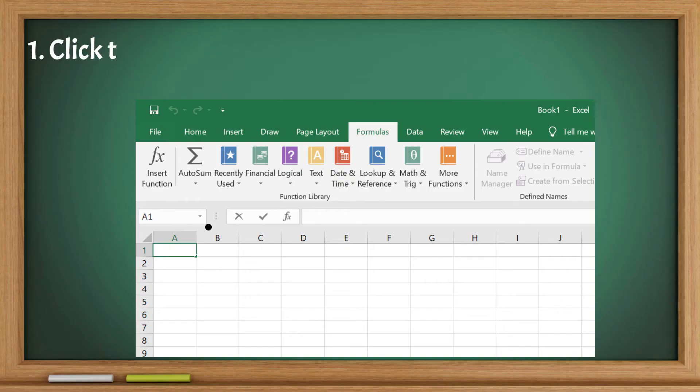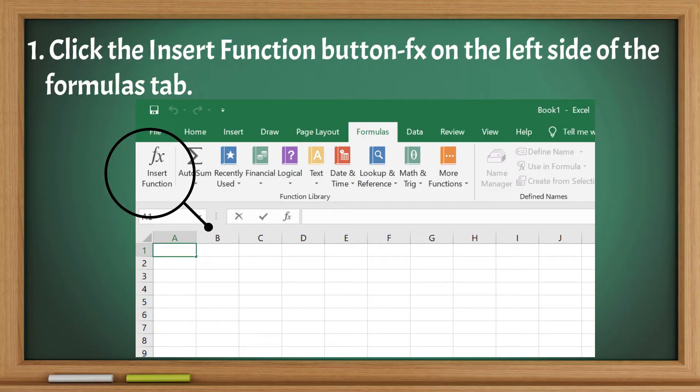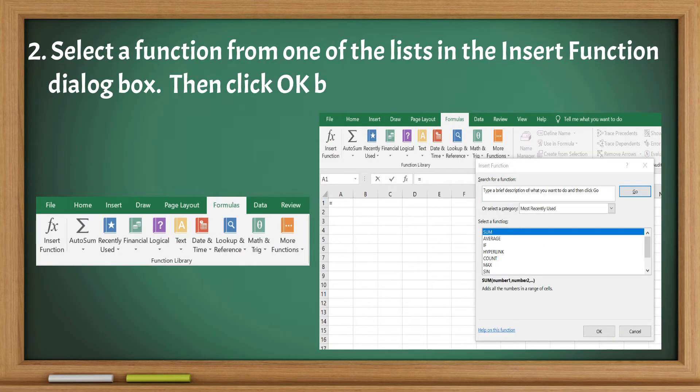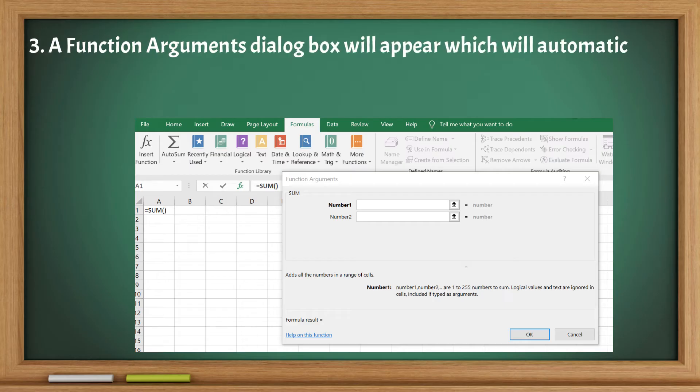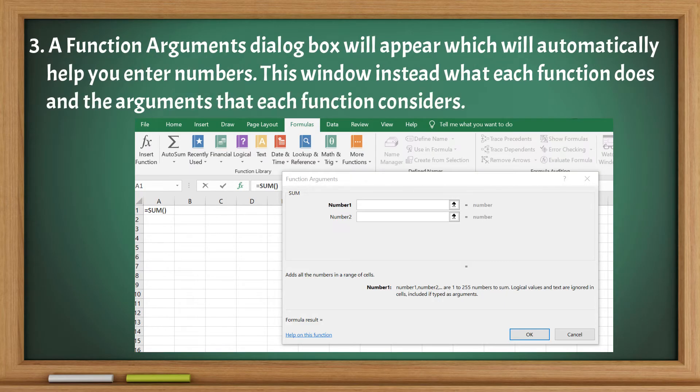All of these can be accessed using the following methods: Click the Insert Function button fx on the left side of the formulas tab. Select a function from one of the lists in the Insert Function dialog box, then click OK button. A function arguments dialog box will appear which will automatically help you enter numbers. In this window, you'll see what each function does and the arguments that each function considers.